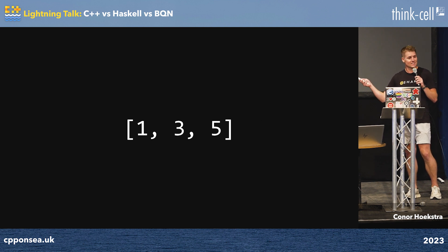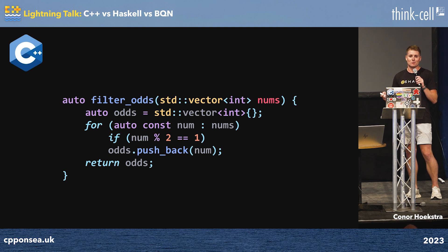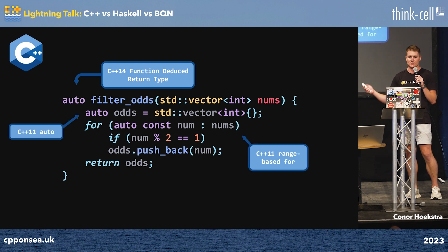First, let's take a look at our first C++ solution, and we are going to use a for loop. Boo — we don't like for loops, but that's where we're going to start. We're making use of a vector, pushing back, and pretty straightforward: C++14 function deduced return type, C++11 auto, and a C++ range-based for loop.